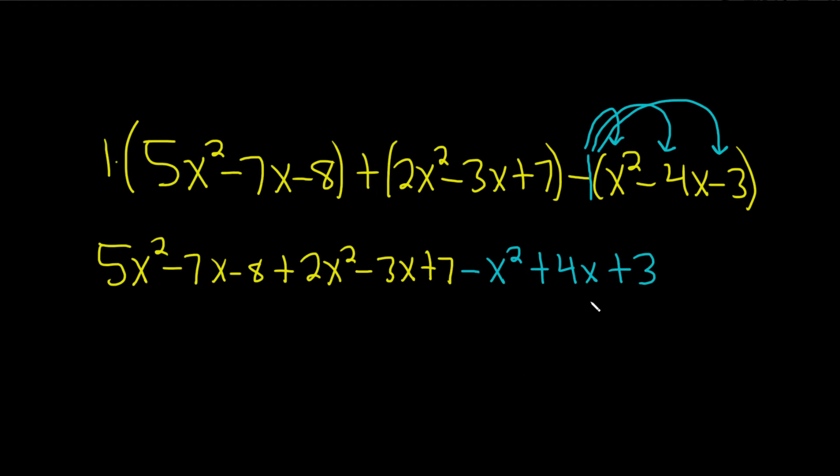Now we can combine everything and write our answer down. Let's start with the biggest exponent which is 2. So 5x squared plus 2x squared gives us 7x squared, but then we subtract 1x squared, so 7 minus 1 is 6. So we have 6x squared.